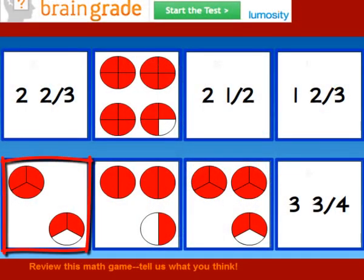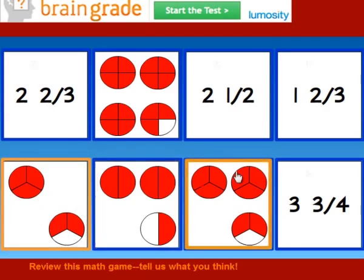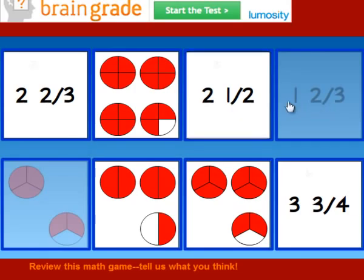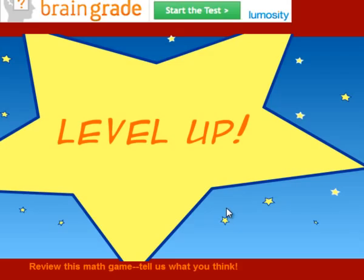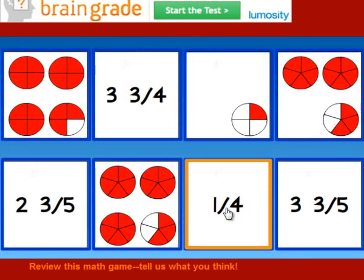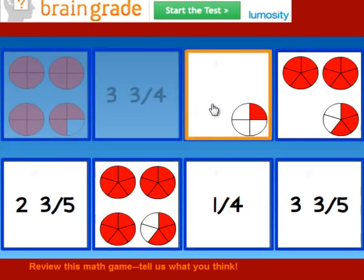For instance, this is 1 whole circle and 2 thirds of another one. So, I'll match it with 1 and 2 thirds. Find 3 more matches like that, and you'll move on to the next level. Just remember, the more you practice, the easier it'll get.